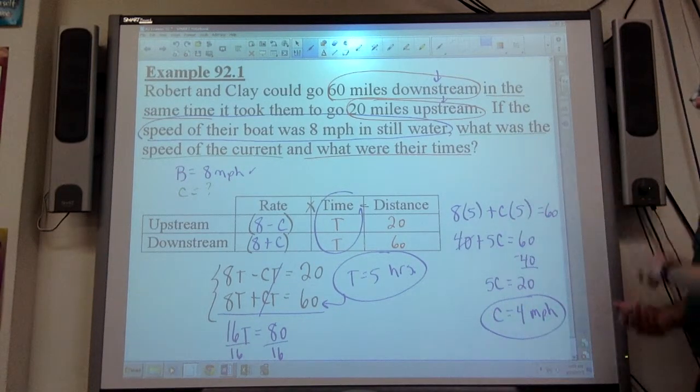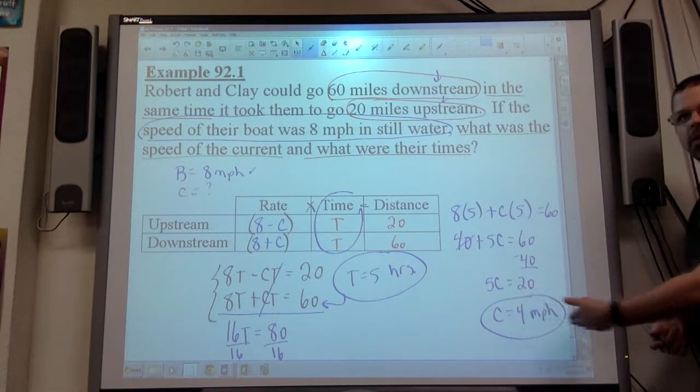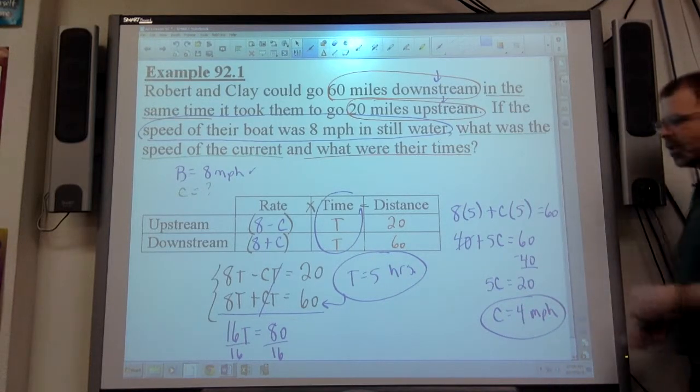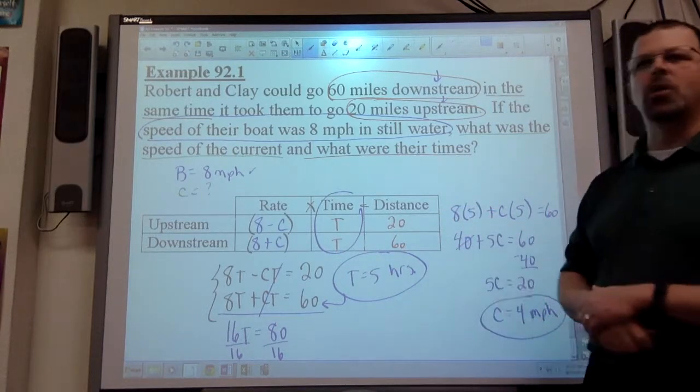Again, I got on my paper, I already know what C represents is current. C always represents current. B always represents speed of boat. So when you get a C equals, know that it's going to have a unit of rate on it. When you get a T equals, it's going to have a unit of time on it. And again, distance is almost always given in these problems.